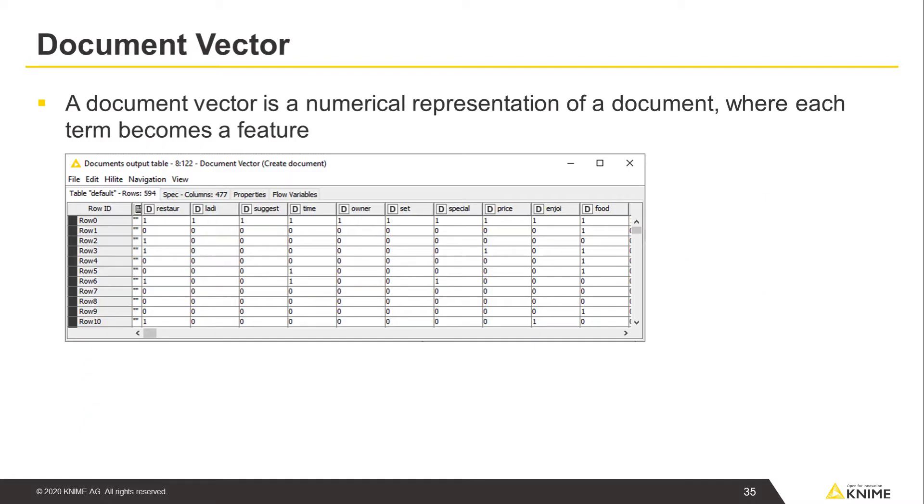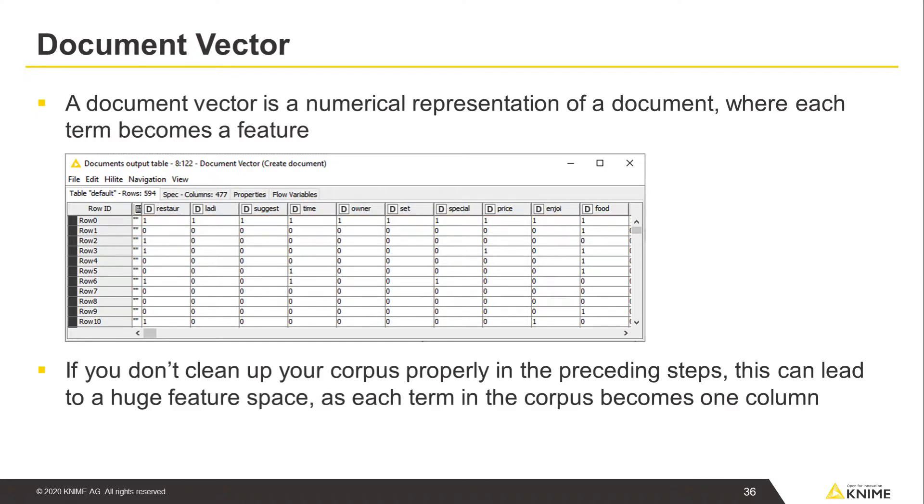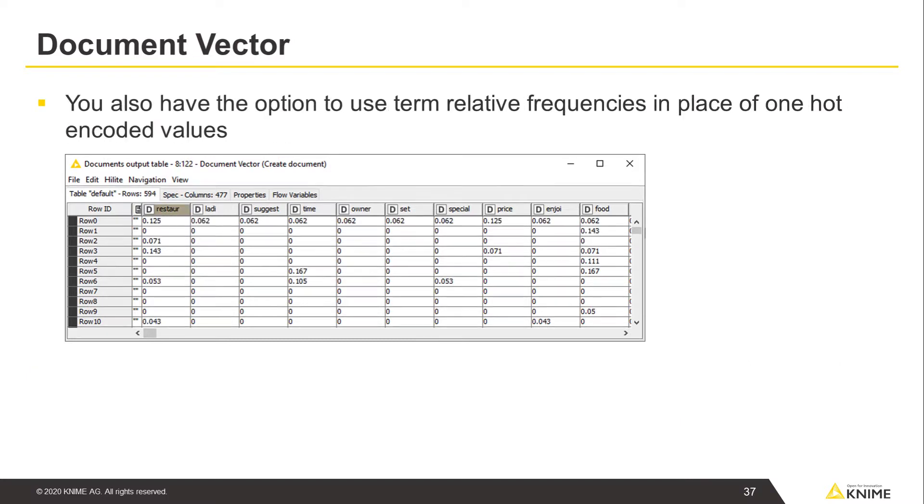A document vector, on the other hand, is a numerical representation of a document in its corpus, where each term that occurs in the corpus becomes a feature. Each document is represented by a vector encoding whether or not a term of the corpus is present or not using one hot encoding. You can see that if you don't clean up your corpus properly in the preceding steps, this can lead to a huge feature space, as each term in the corpus becomes one column. You also have the option here to use term relative frequencies in place of one hot encoded values.